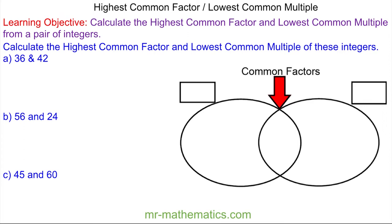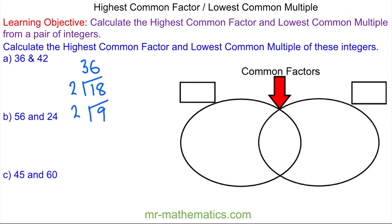Welcome to our lesson on finding the highest common factor and lowest common multiple of two or more integers. We need to break 36 and 42 down into their prime factors. For 36, the lowest prime number that goes into it is 2, and 2 goes into it 18 times, 2 goes into 18 nine times, and 3 goes into 9 three times, and finally 3 goes into 3 once.